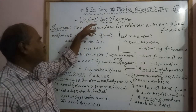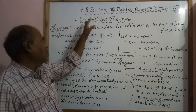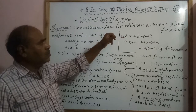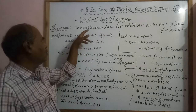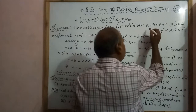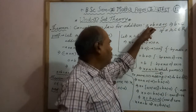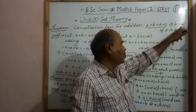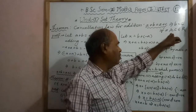Welcome. In this video we continue with Unit 1. We have completed the unit on Laplace transformation. Now Unit 3: the Cancellation Law for Addition. The law states: if a plus b equals a plus c, then b equals c, canceling a. This holds for every a, b, c belonging to the real numbers R.